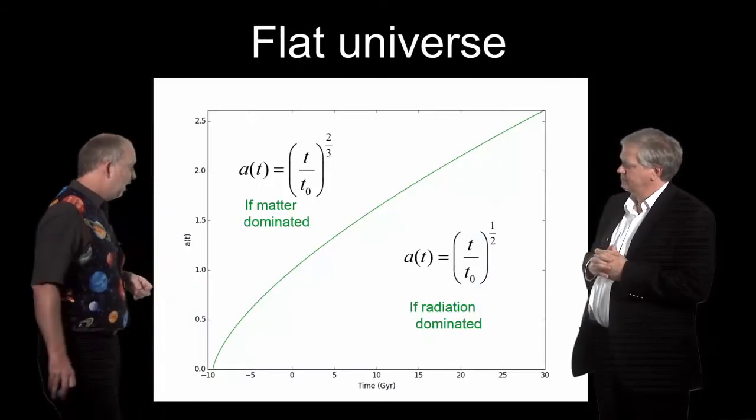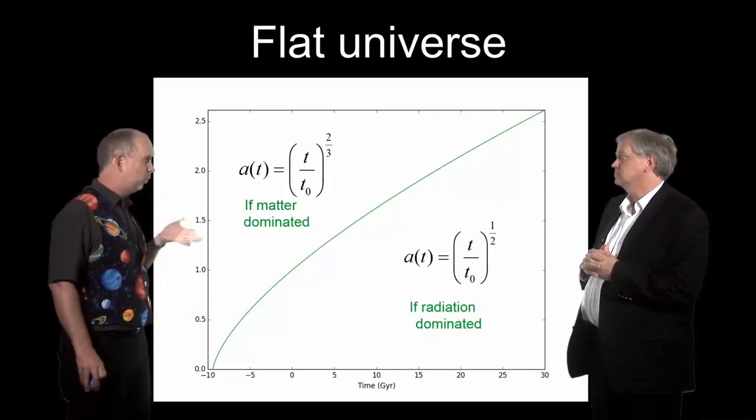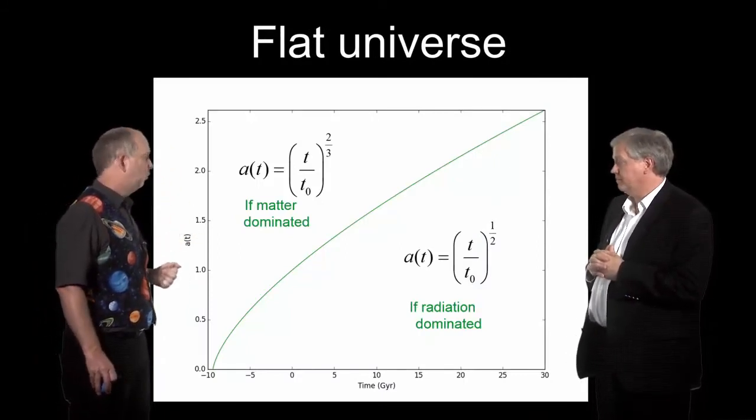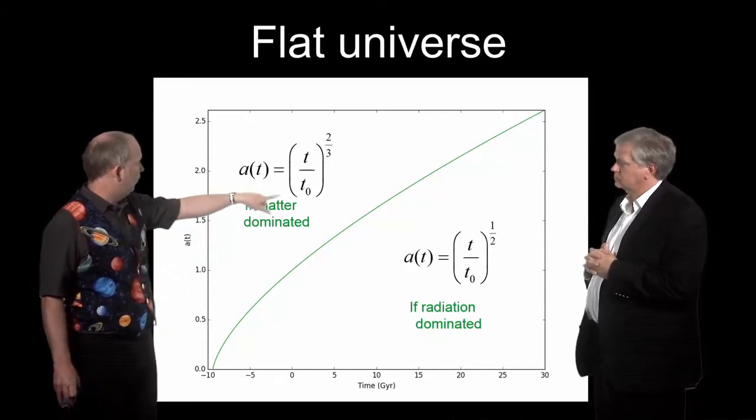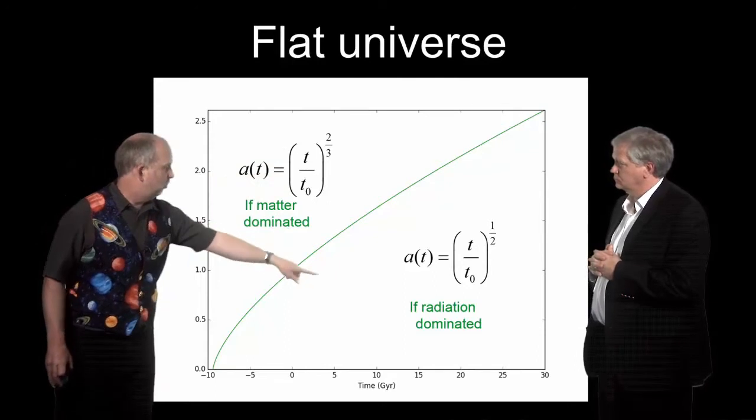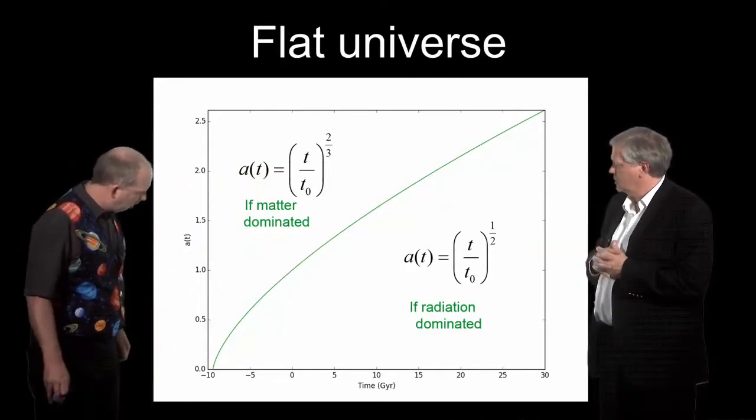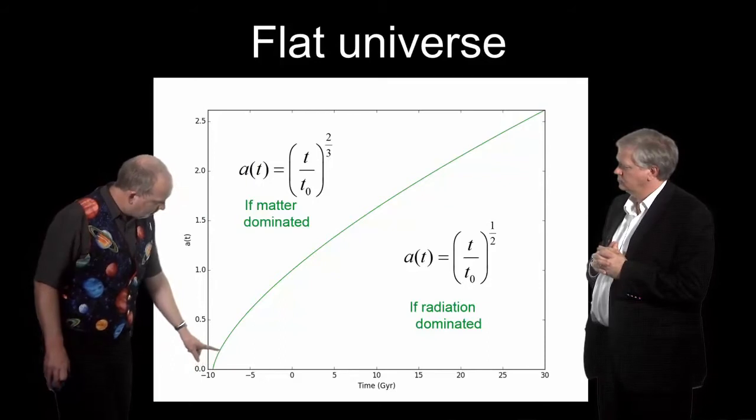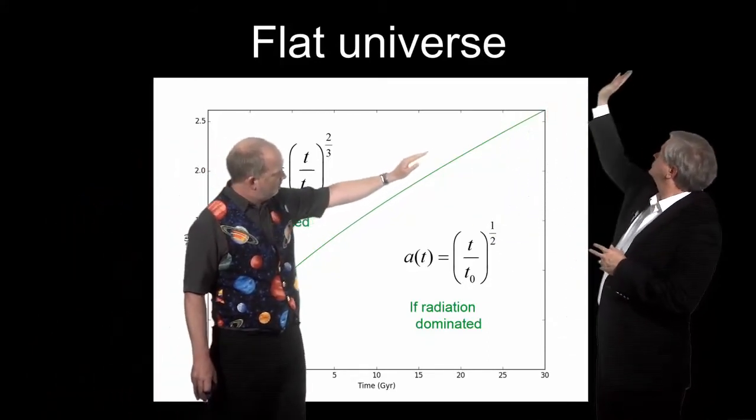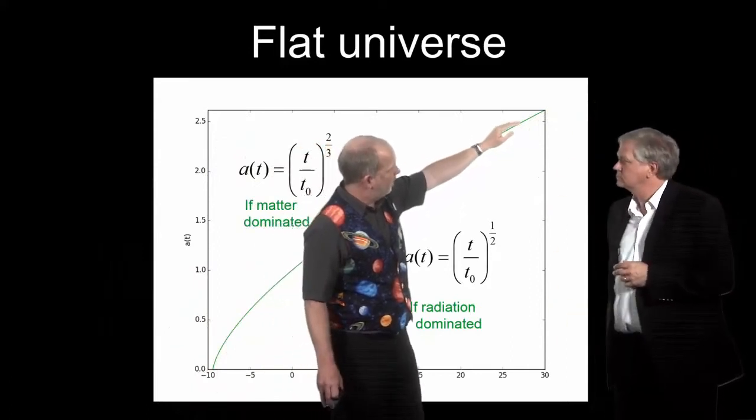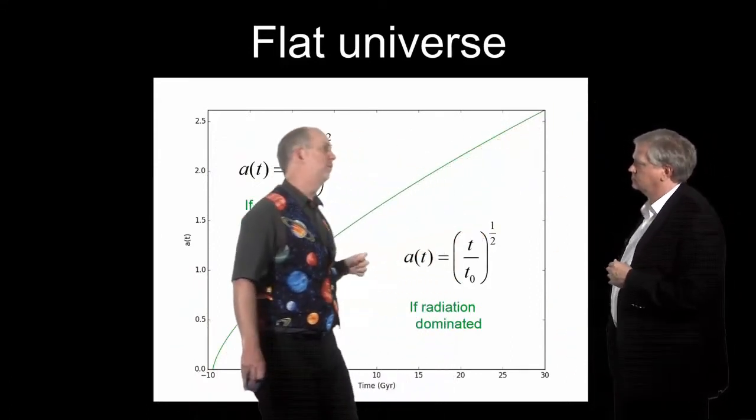Yeah, so if you get the output of the program. It turns out this particular case, k equals zero, you can solve. And we'll show that in the reference notes. So what you get is, if it's matter-dominated, A goes as t over t0 to the two-thirds. If it's radiation-dominated, it's the half power. But this is exactly what we've seen. It starts off expanding very fast, and always drops off, because it's going as one over root t, and slows down and slows down and slows down, but never stops.